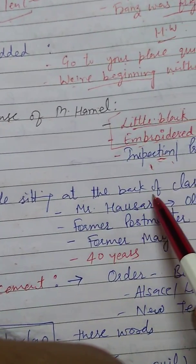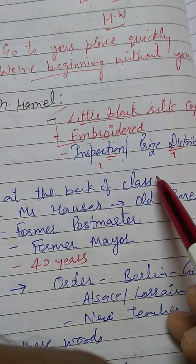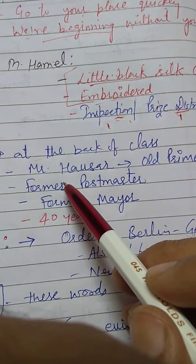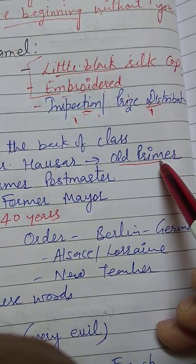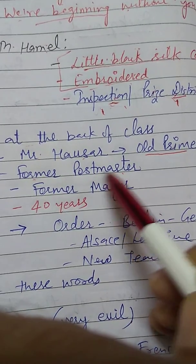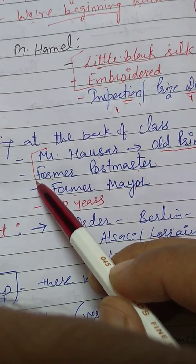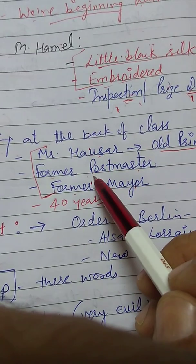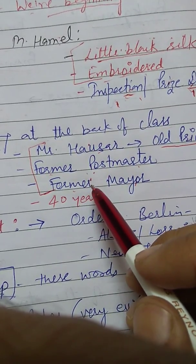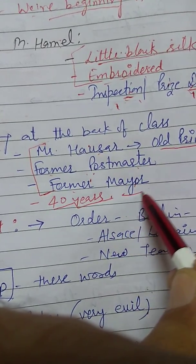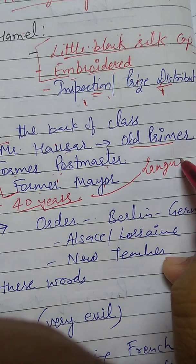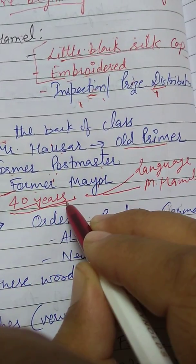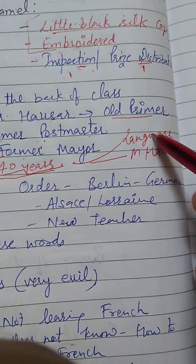Franz also observed that some village people were sitting at the back of the class. He was usually the last one sitting at the back, but today others were behind him. Among them were Mr. Hauser with an old primer, the former postmaster, and the former mayor. The writer Alphonse Daudet described these three characters from the village people. They had come to show respect to their language and to honor M. Hamel's faithful service of 40 years of teaching in that school.